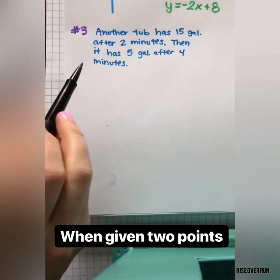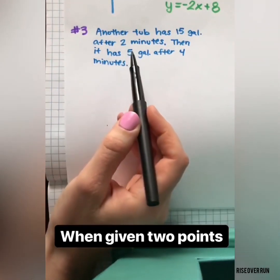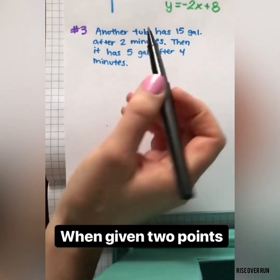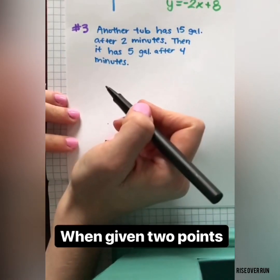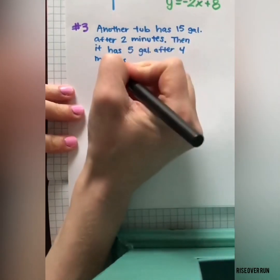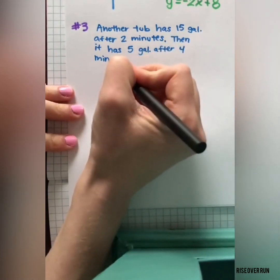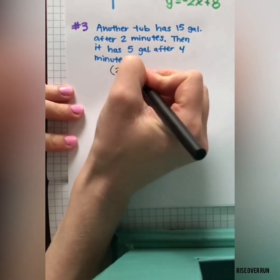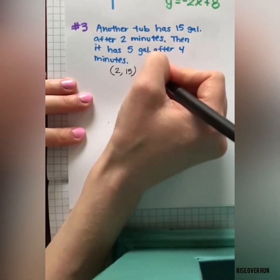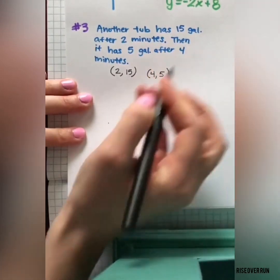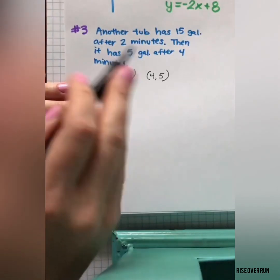Sometimes you might see a linear relationship represented just by 2 points. And in this situation, they're just giving it to you in a story format. Another tub has 15 gallons after 2 minutes, then it has 5 gallons after 4 minutes. This is basically two ordered pairs. We want to be consistent and keep the time as the x value. So we have 2 and the gallons are the y value. Then we have 4 minutes and 5. So these two ordered pairs can now be used to write an equation for this linear relationship.